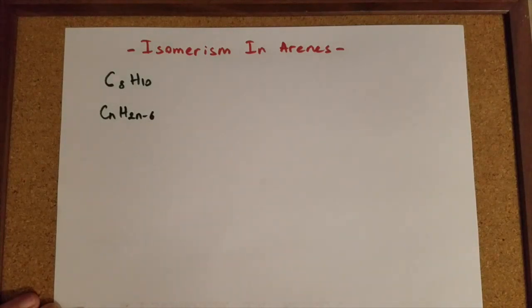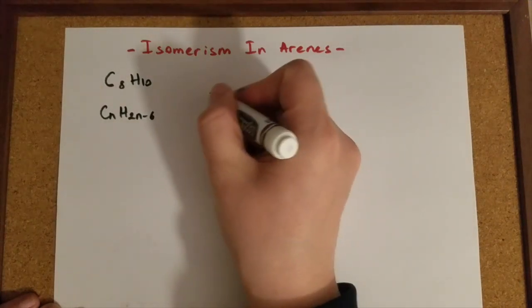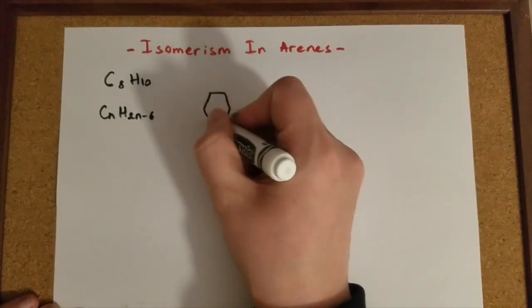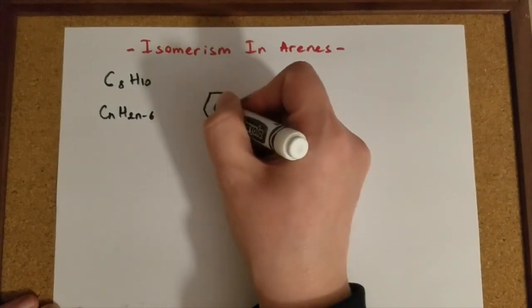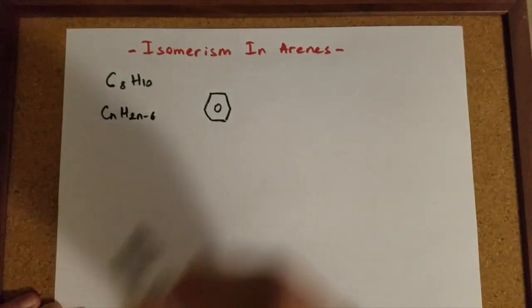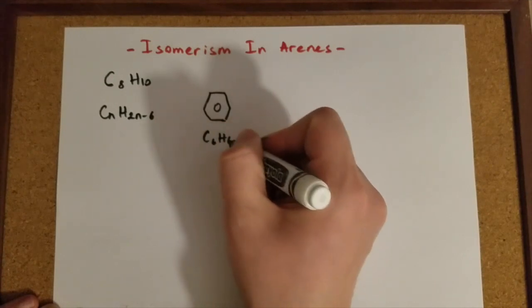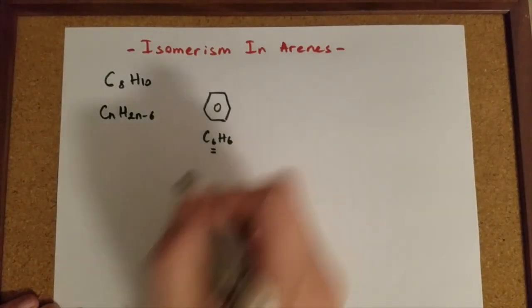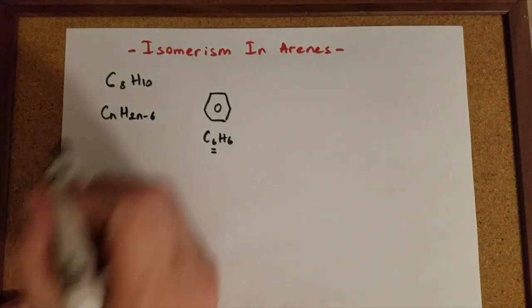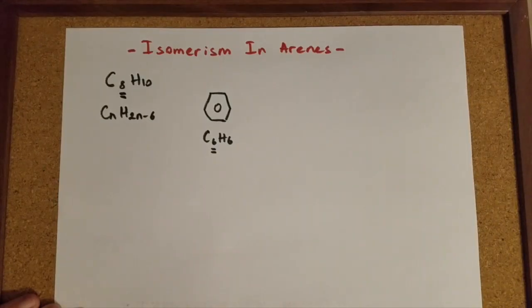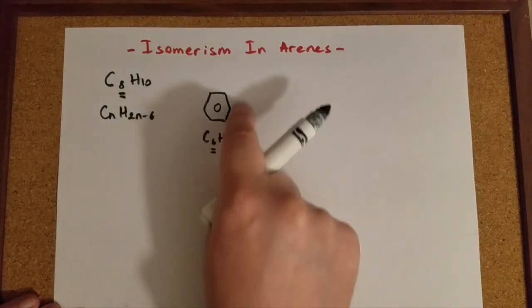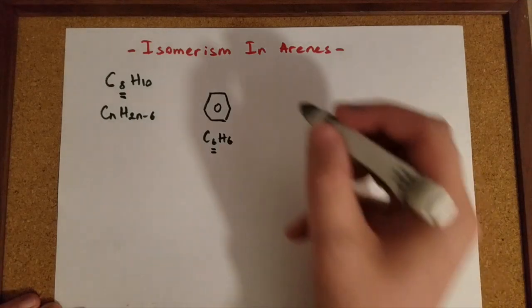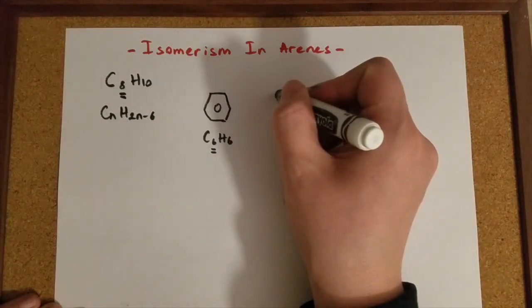Now let's try to make some isomers for this compound. As you remember, the basic compound of aromatic hydrocarbons was benzene. It was this one with a circle in the middle. This is C6H6. It does have 6 carbon atoms. But in here, in our compound, we need to have 8 of them, 8 carbon atoms. So it means that in addition to these 6 carbon atoms in here, we need to have 2 carbon atoms. What can I do then? Let's try making some isomers.